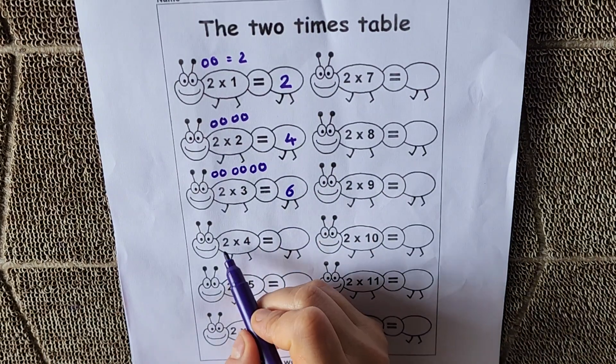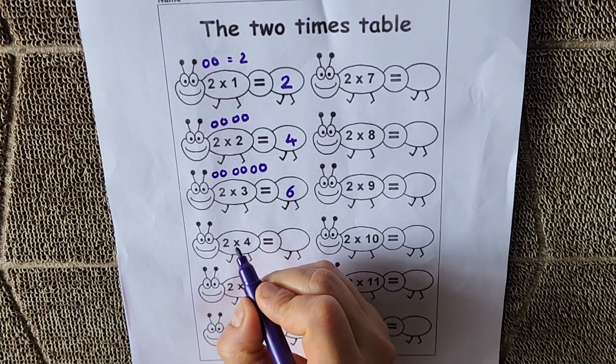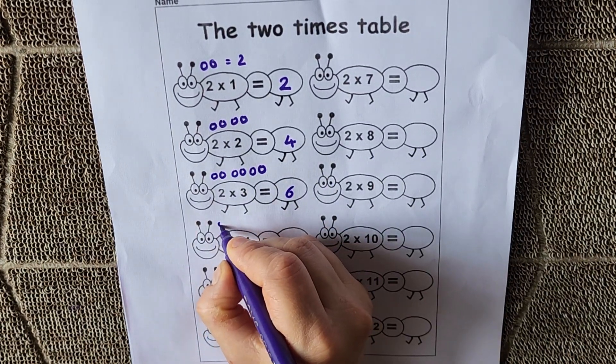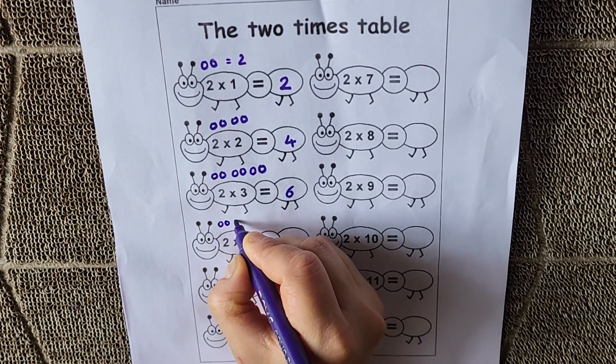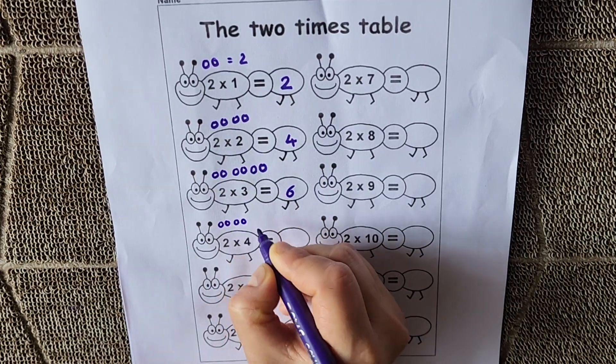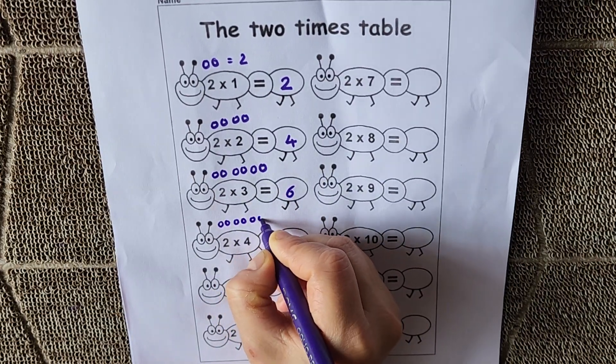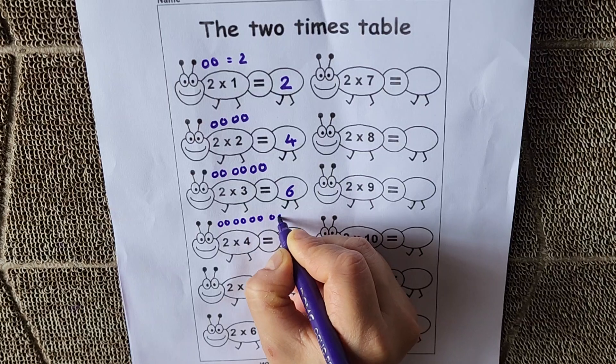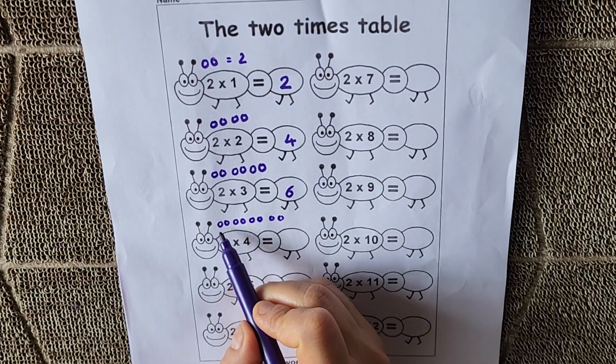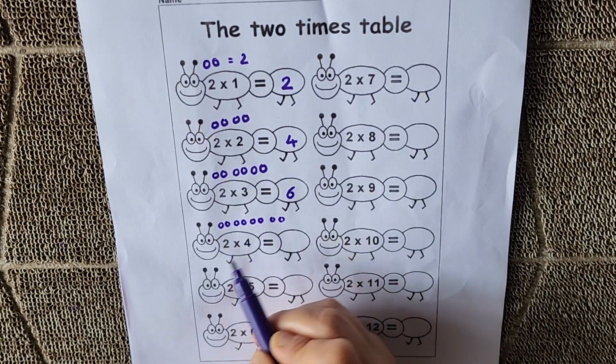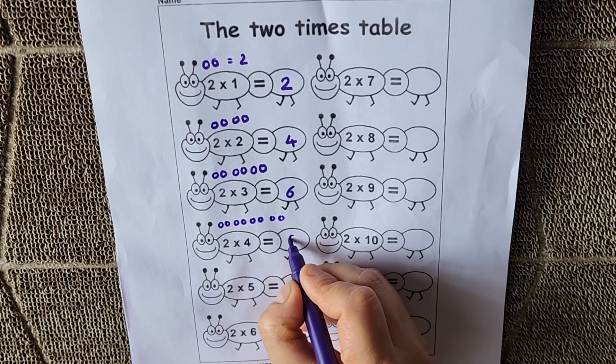Next, 2 4s are 8. Counting the balls: 5, 6, 7, 8. So 2 4s are 8.